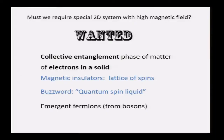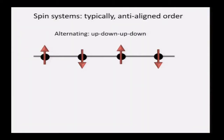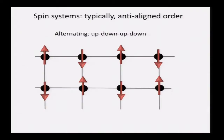Theoretically, we expect very strange things here. We have bosons — the spins are bosons — but out of these bosons, from entanglement, we expect to get fermions. So let's step back from the entanglement story and look at some spin systems for general context. Imagine a 1D system, an array of spins; typically what you see is them arranging into an alternating up-down-up-down pattern. Often you have a square lattice, like in the copper oxide superconductors we'll hear about later, and you still get this kind of alternating pattern where an up spin has neighbors pointing down.